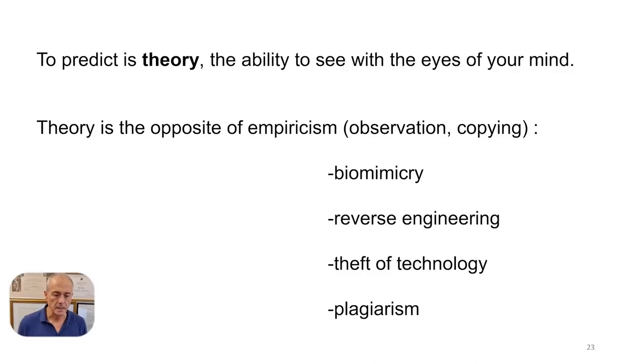So there are a couple of conclusions to retain from this presentation. One applies to research in academia, which is that theory, first of all, is the ability to see with the eyes of the mind. This activity is called idea, coming from ancient Greek. Theory is the complete opposite of empiricism. Empiricism is observing and then copying. Most of what goes on in science, and especially in engineering, is of the empirical kind.